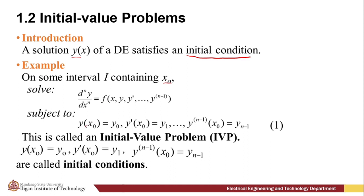The initial conditions are: y(x₀) = y₀, y'(x₀) = y₁, up to the (n−1)th derivative of y at x₀ equals y_{n−1}. These are called the initial conditions of the initial value problem.